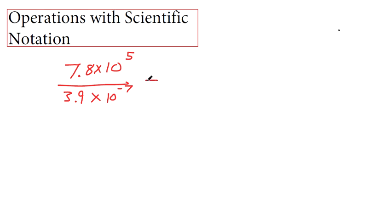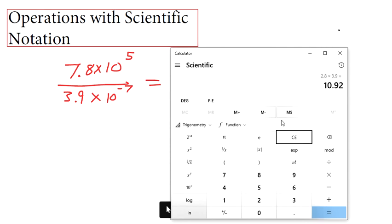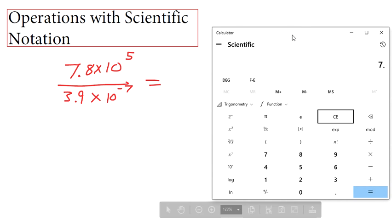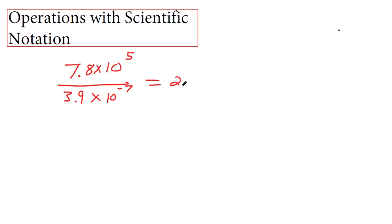Okay, if you want to divide these two numbers, we can use the same idea about operations with the plain old numbers. Let's just divide the plain old numbers, 7.8 and 3.9. That's nice. It comes out to be 2. But if it came out to be 2.1, that's okay. Just put it on there.